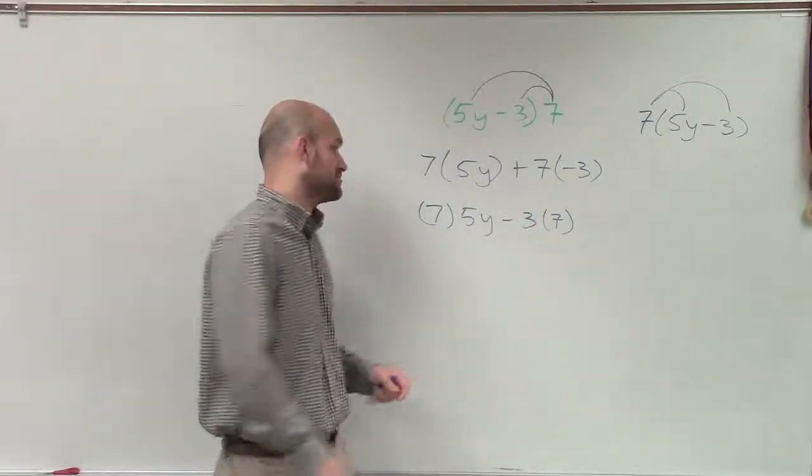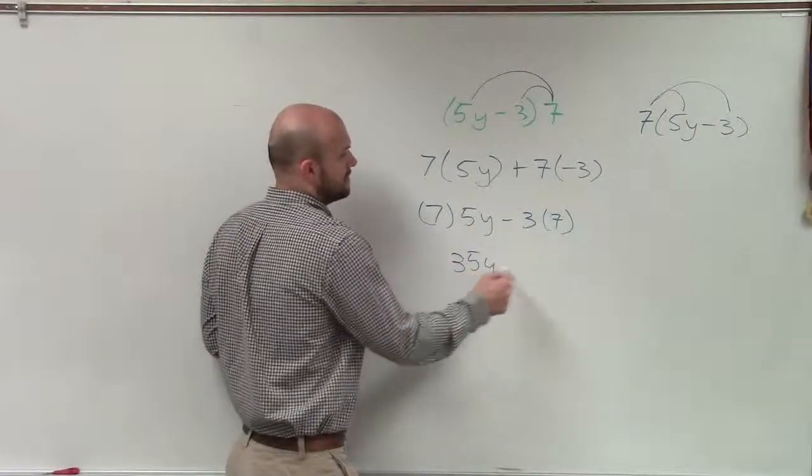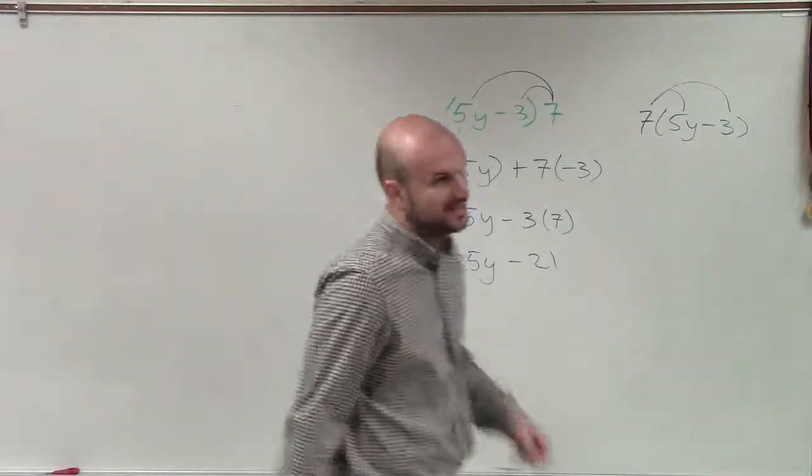Okay. You guys see this? So you multiply by both terms. 7 times 5y is 35y minus 21. That's your final answer.